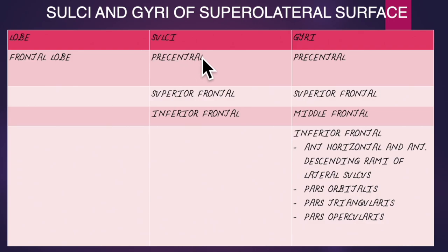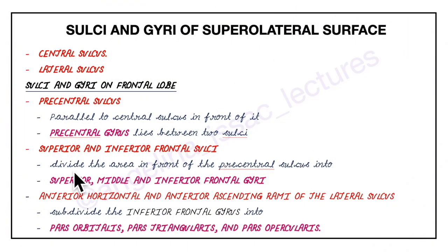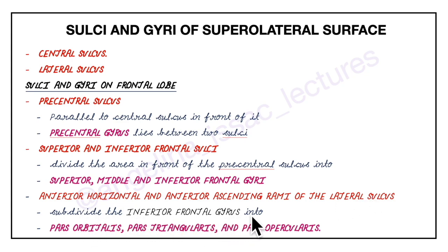To summarize the sulci and gyri of the frontal lobe: sulci include the pre-central, superior frontal and inferior frontal. Gyri include the pre-central, superior frontal, middle frontal and inferior frontal gyrus. The inferior frontal gyrus is further subdivided into pars orbitalis, pars triangularis and pars opercularis by the anterior horizontal and anterior ascending ramus of the lateral sulcus. The pre-central sulcus runs parallel to the central sulcus in front of it, and the pre-central gyrus lies between these two sulci.